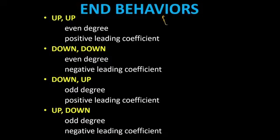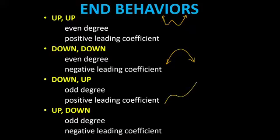I'm going to give you just an example of a graph. This is an example of an up-up end behavior. When you say down-down, like for example this — this is a down-down end behavior. When I say down-up, starting with down then you go up — the left side is going down, the right side is going up. When I say up-down, the left side is going up and the right side is going down. So those are just examples of end behaviors and the graphs.